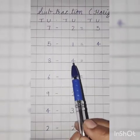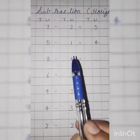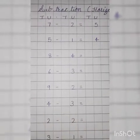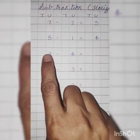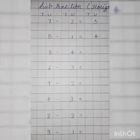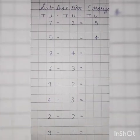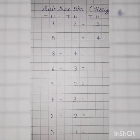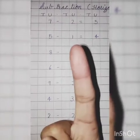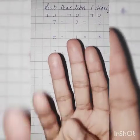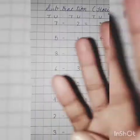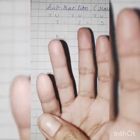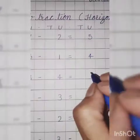8 minus 4. Throw 4. Count till 8. After 4: 5, 6, 7, 8. How many fingers are left? 1, 2, 3, 4. So, answer is 4.